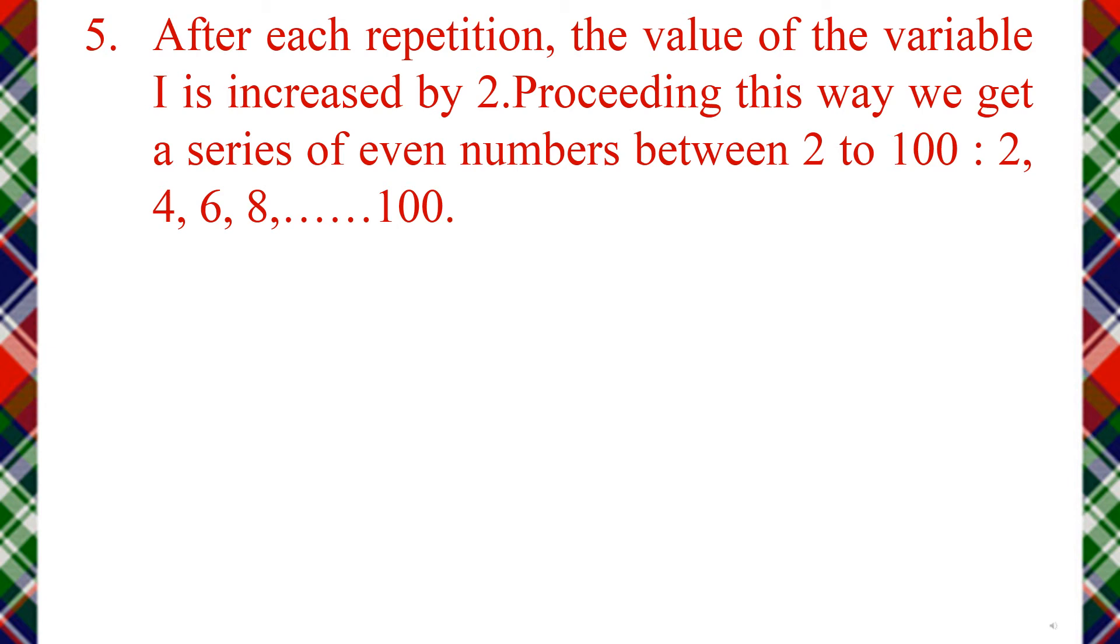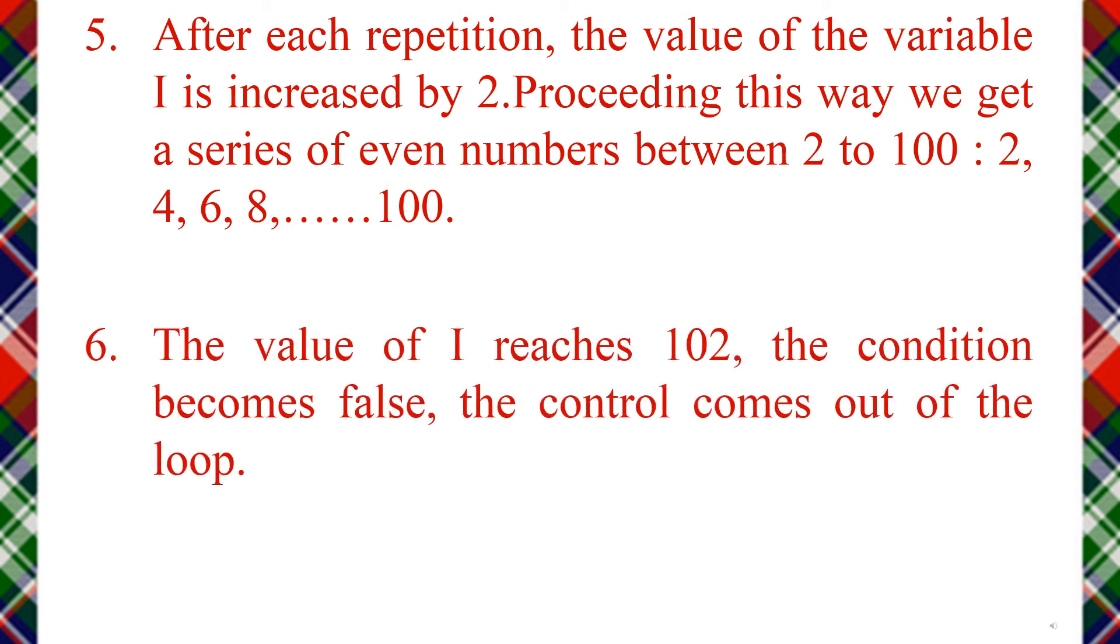Step 6: When the value of I reaches 102, the condition becomes false, and the control comes out of the loop. So when it reaches 102, the condition becomes false and we exit the loop.